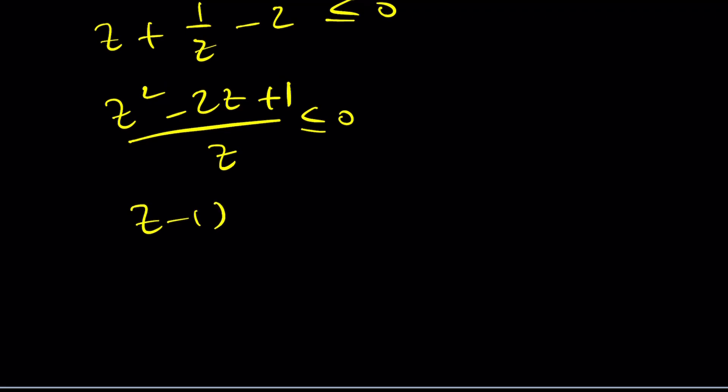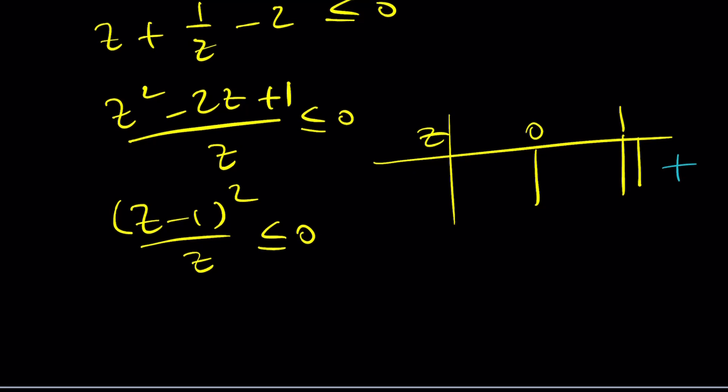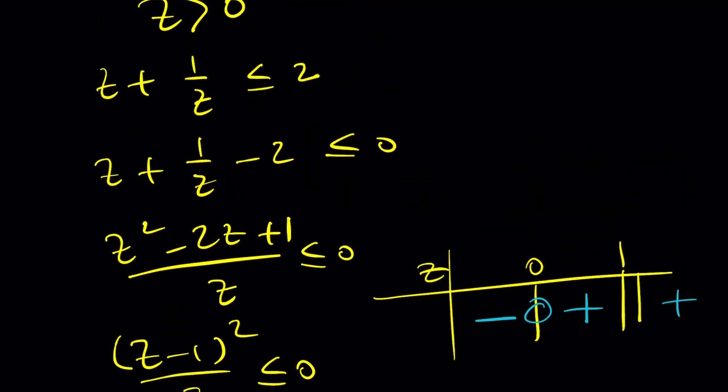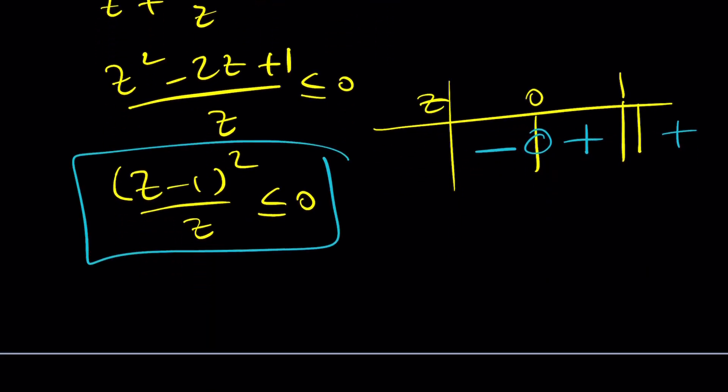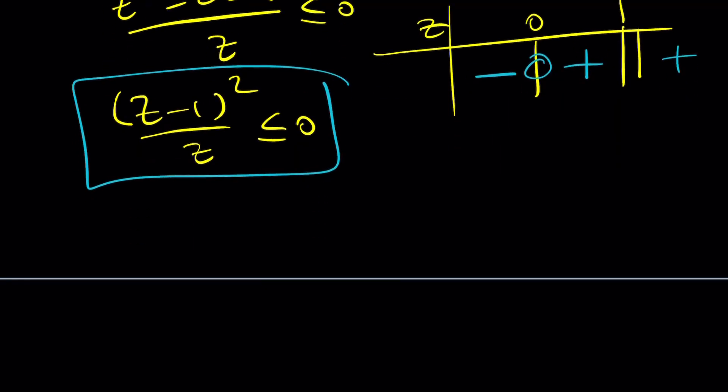Solve this inequality using method of intervals. This is z minus 1 squared over z, very similar to the first one. On our table, we're going to have z, 0, and 1 here. This time, the double root is going to be at 1 because we have z minus 1 squared. We're going to start with a positive sign again because if z is greater than 1, we have a positive quantity. It's not going to change here. And now we're going to get a negative quantity here. I do want the minus sign because I want this expression to be less than or equal to 0. But z cannot be 0.